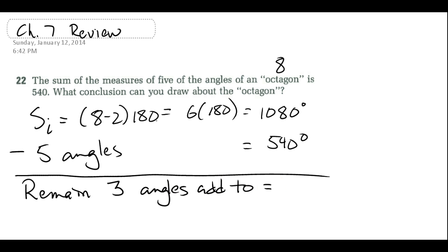So 1080 minus 540 is also 540. So we have 3 angles that add up to 540, just for the sake of figuring out an average.